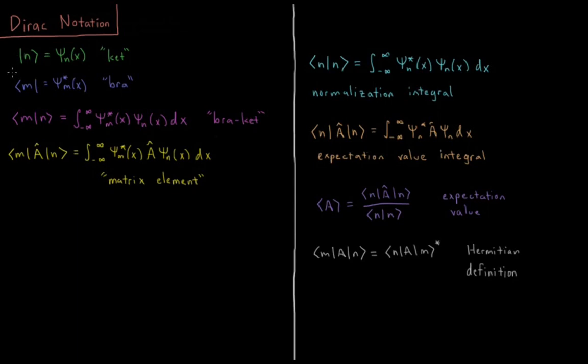So we'll start off with what we call a ket vector, which is a vertical line, followed typically by a single character, usually a number or a letter. So n usually would be the most general case, and then a kind of bracket on the right there, a greater than sign, and this is equal to psi n of x.